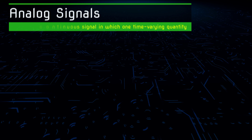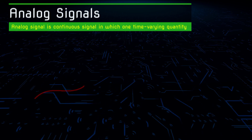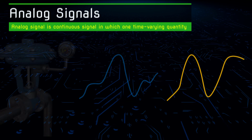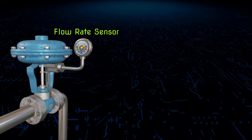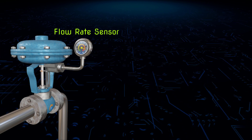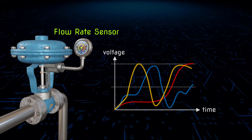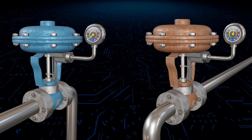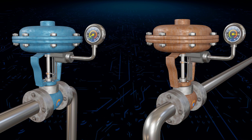Before moving into the details of the ADC, let's talk about analog signals. Generally, the analog signal is measured by a sensor. For example, we can use a flow sensor to measure the flow rate of liquid in a pipe. If the output of the flow rate sensor is a voltage value related to the flow rate, we will get a signal whose voltage waveform continually changes over time, depending on the flow rate in the pipe. The sensor gives us an analog voltage signal. We need to process these analog signals in our computer to do something useful.